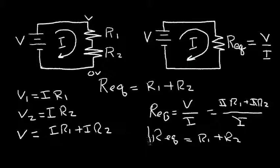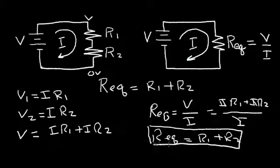So we've used Ohm's Law and we've shown that the equivalent series resistance is just the sum of the resistors. So in a series circuit, the equivalent resistor will always be bigger — bigger than any of the resistors in the series circuit.